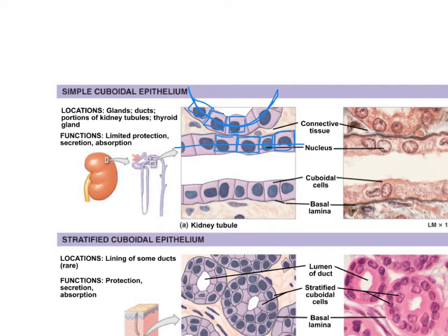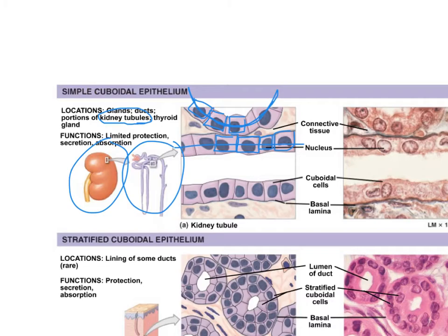Simple cuboidal cells are found in the kidney tubules. Later in the semester when we cover the urinary system, we'll discuss how these cuboidal cells allow things like sodium, glucose, ions, and nutrients to be absorbed across them back into the body. Memorize the picture — this is the kidney tubule inside the kidney.